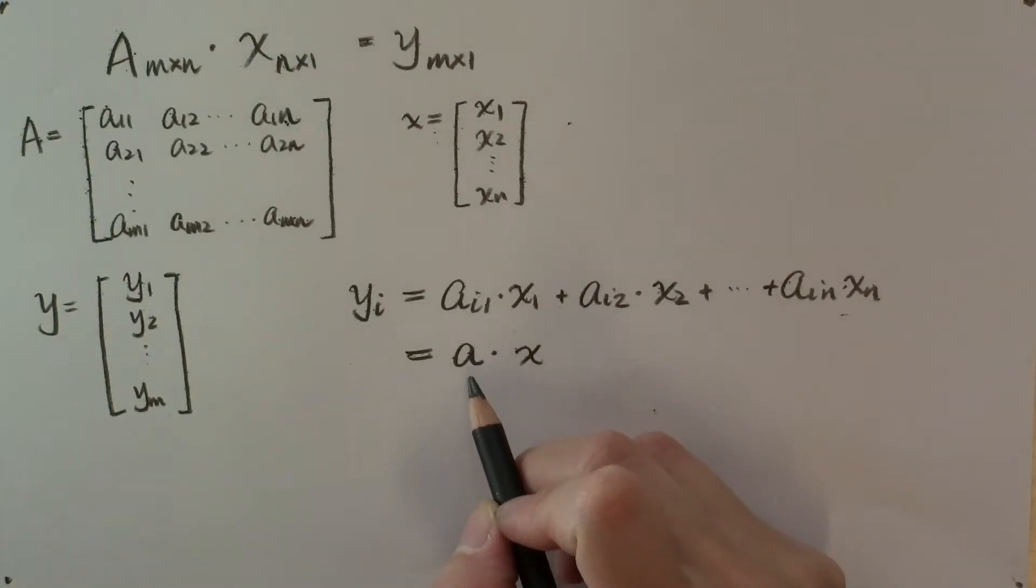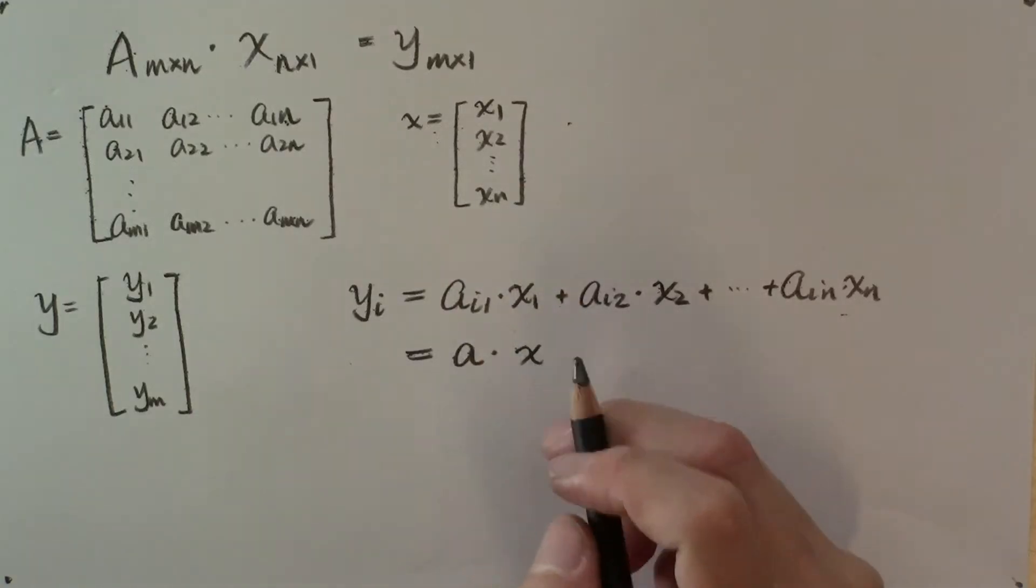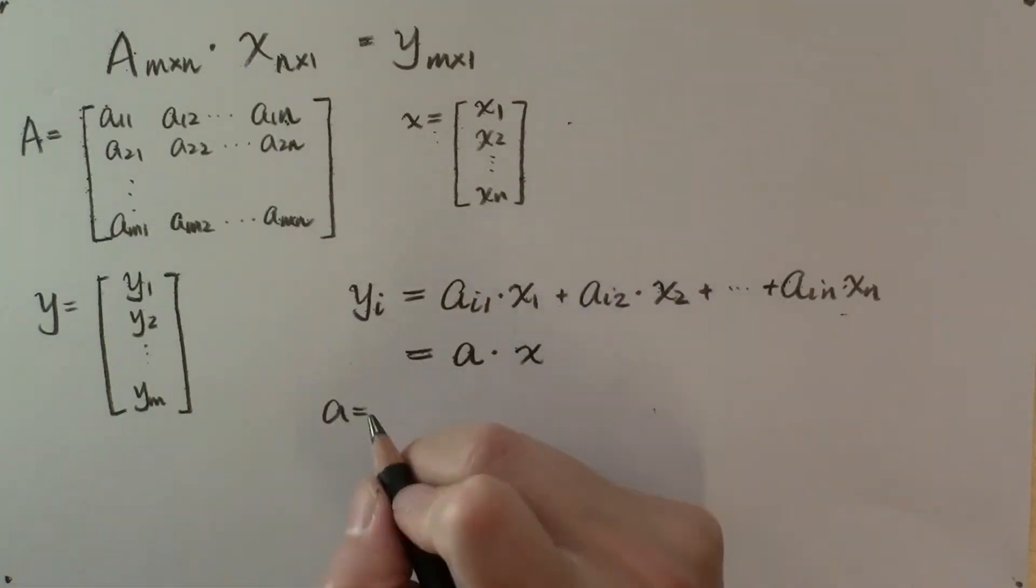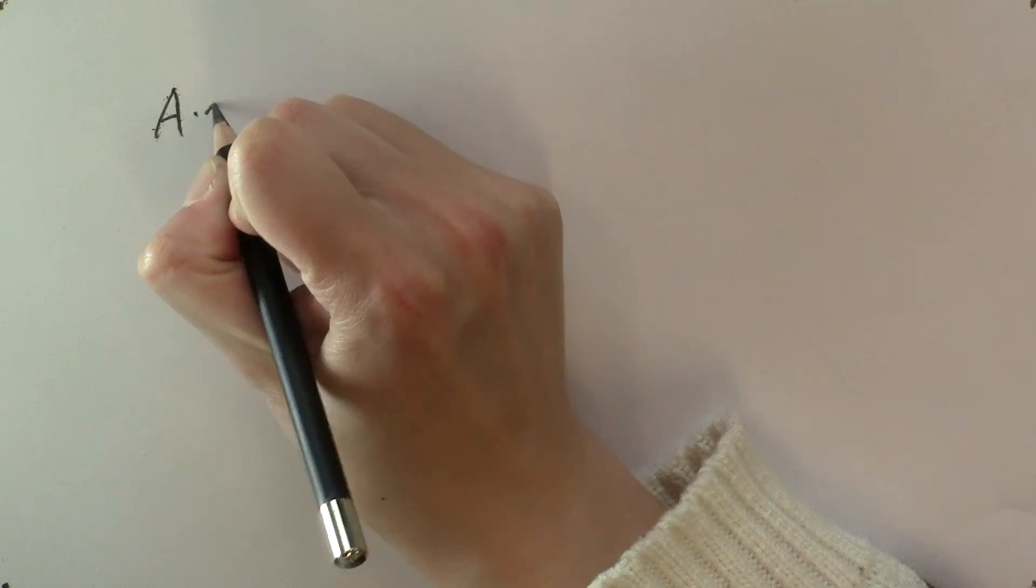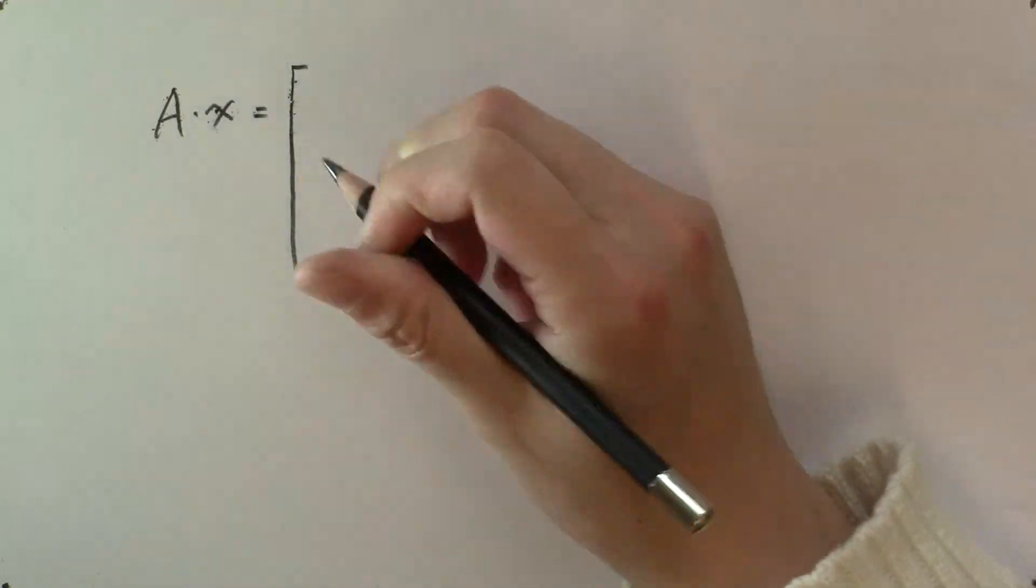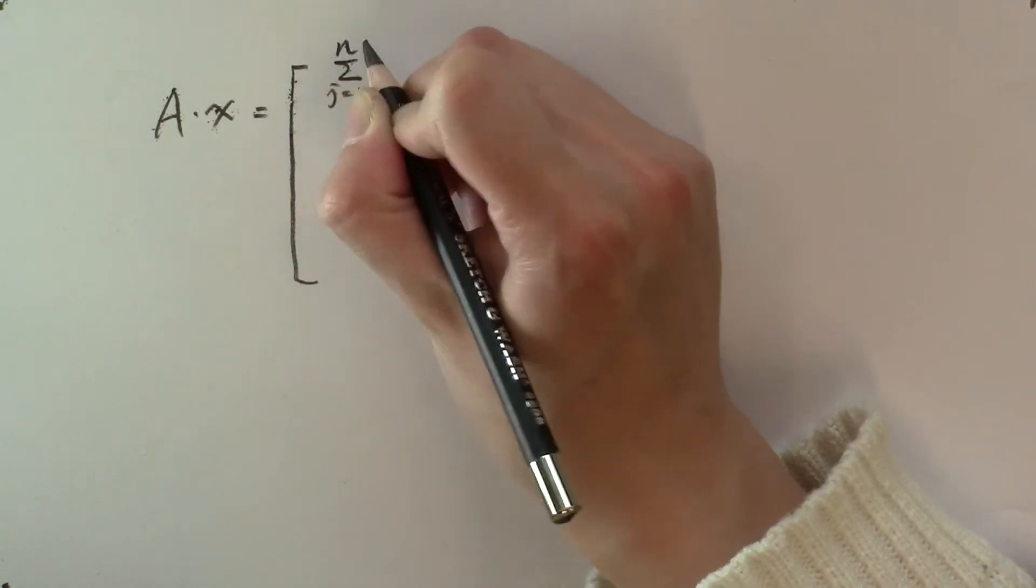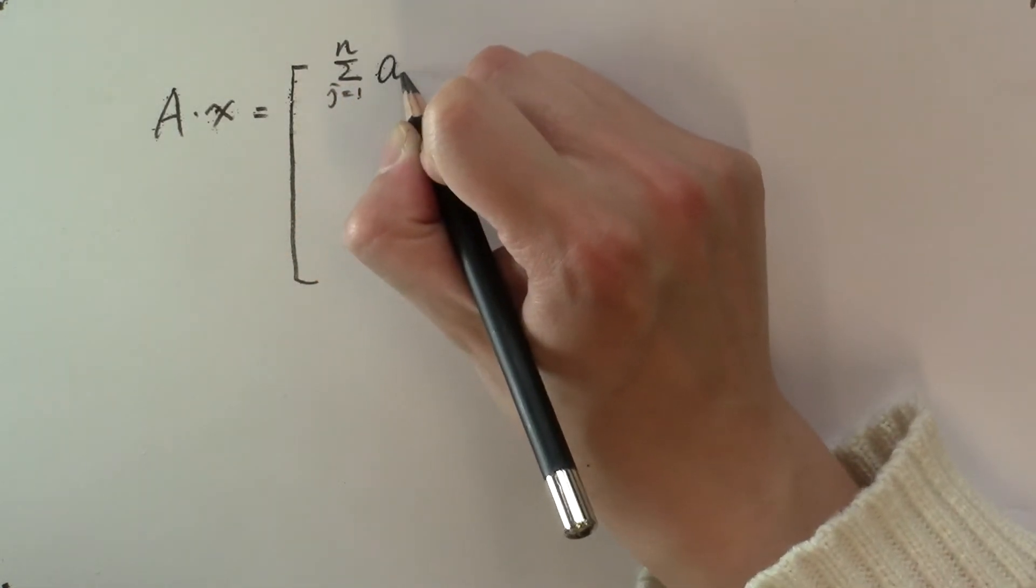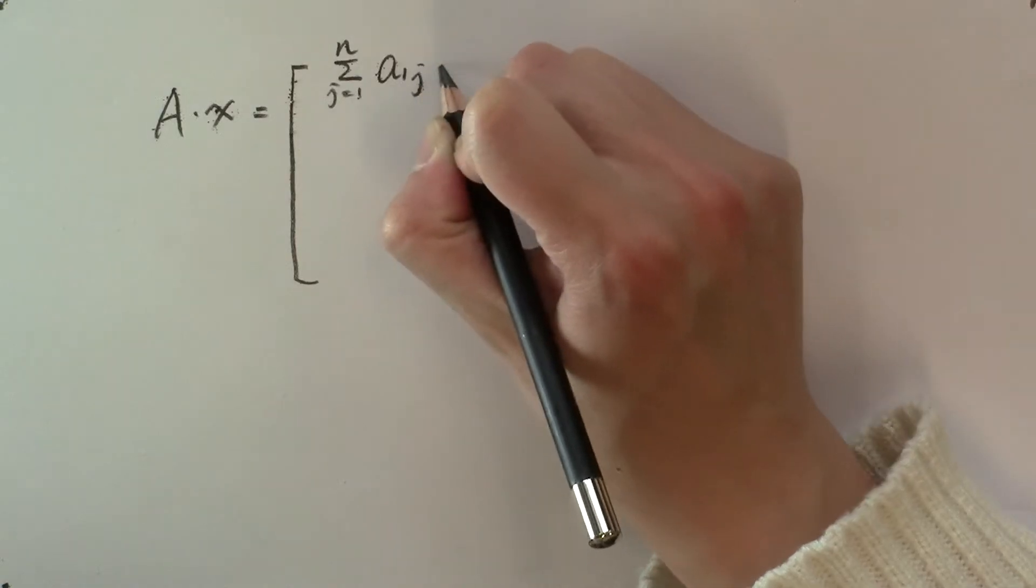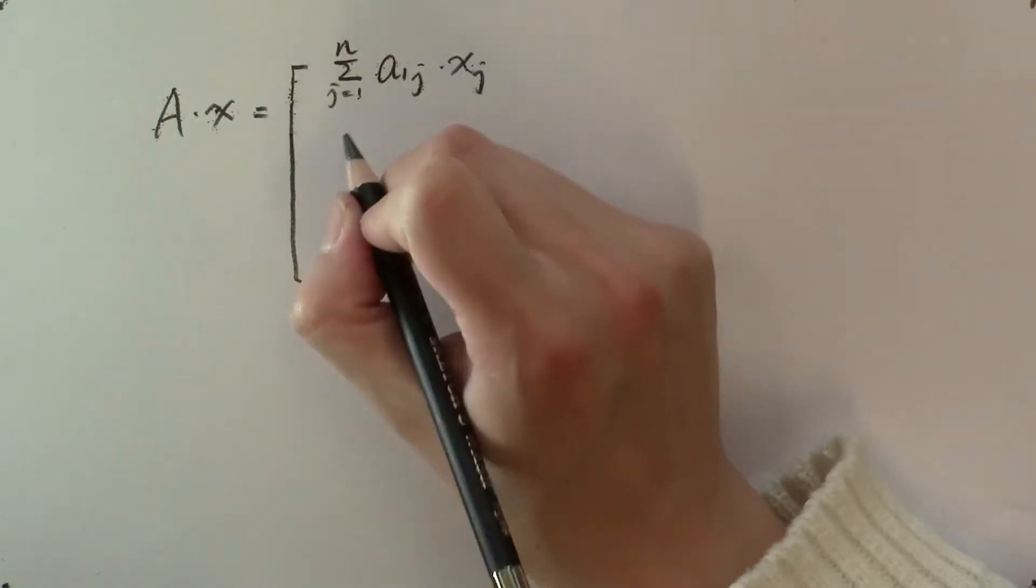You're right, it's exactly the scalar product of a vector a and this vector x, if a is the vector that is the i-th row of matrix A. Therefore, the product of A and x is defined as the vector whose i-th element is the scalar product of the i-th row of A and vector x.